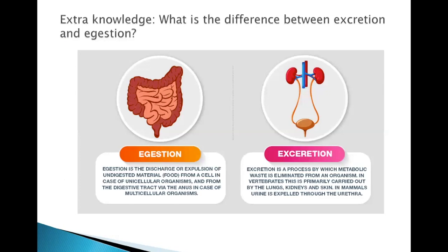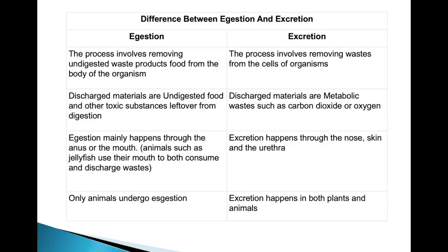For extra knowledge: the difference between egestion and excretion. Egestion is the discharge or expulsion of undigested materials from the cell in unicellular organisms, and from the digestive tract via the anus in multicellular organisms. Excretion is the process by which metabolic waste is eliminated from an organism; in vertebrates this is carried out by the lungs, kidneys, and skin. In mammals, urine is expelled through the urethra.